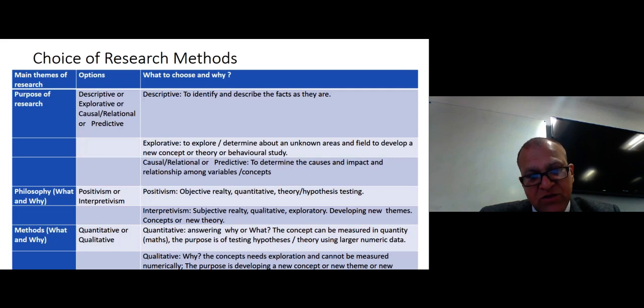Next stage is methods. What are the methods you are using? Why methods using? There can be two broad methods: quantitative and qualitative methods. Quantitative methods are for answering questions of what and why. Remember the concept can be measured. So if you think motivation, it has to be measured. If you're saying profit, it must be measured. If you're saying indicators of some success, you must be measured. So concepts should be measurable in the form of quantity or number, which means maths. And the purpose is for testing hypothesis or theory using large numerical data.